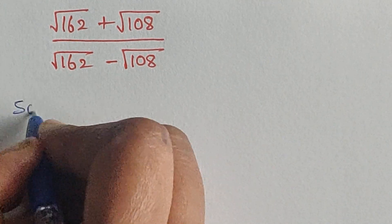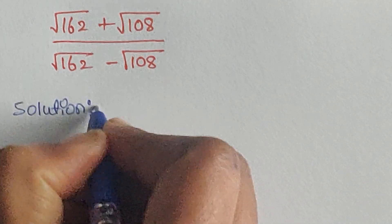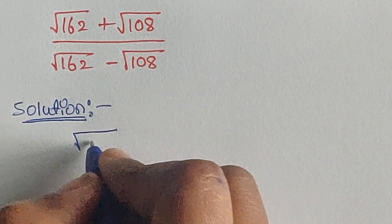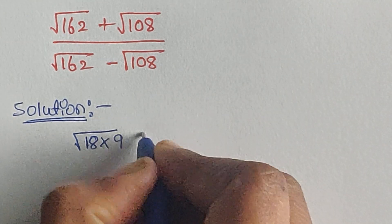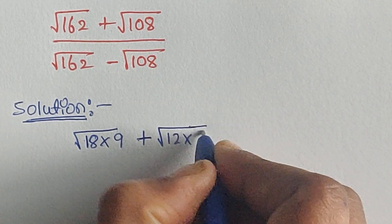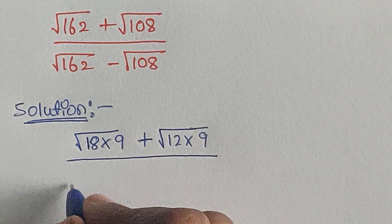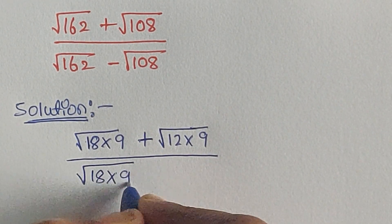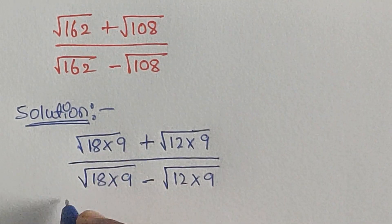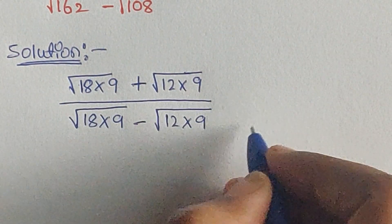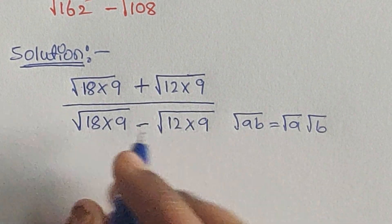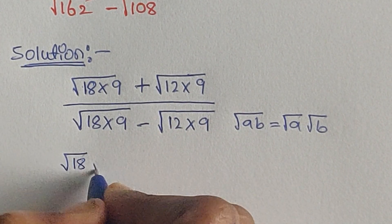Let's see — square root of 162, we can write it as 18 times 9; plus square root of 108, we can write it as 12 times 9; divided by 18 times 9 minus square root of 12 times 9. Next, we can use the formula: square root of a times b equals square root of a times square root of b.